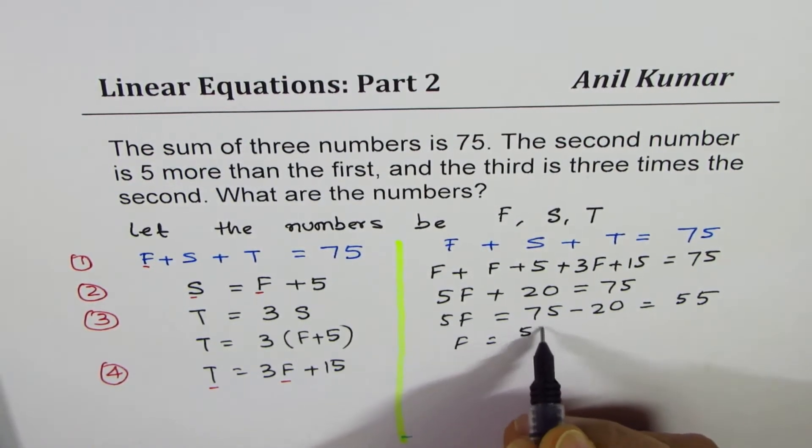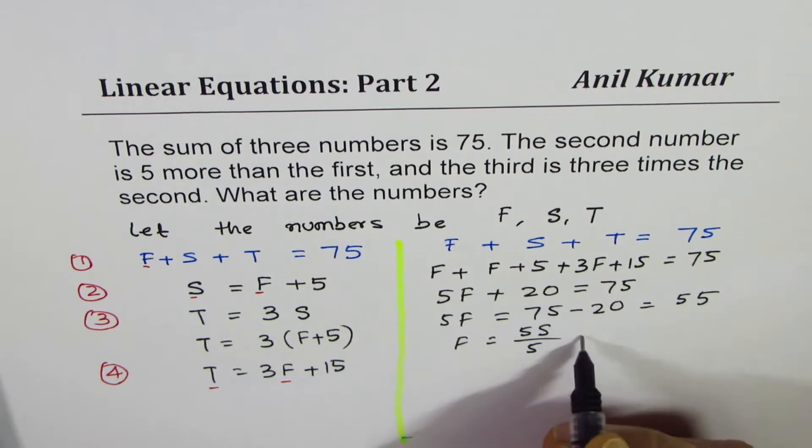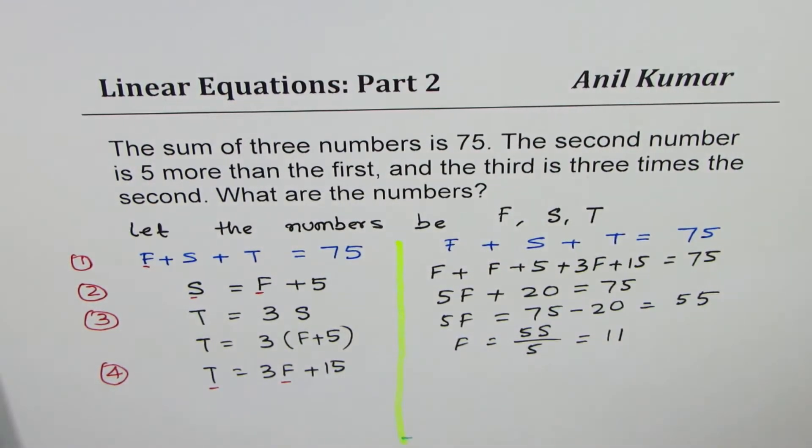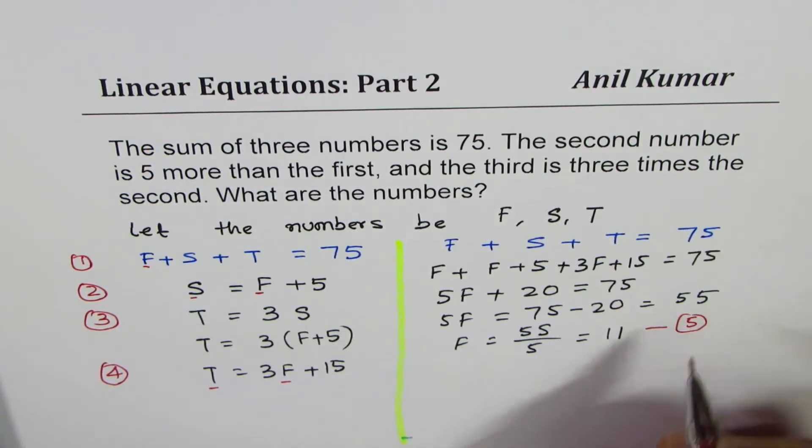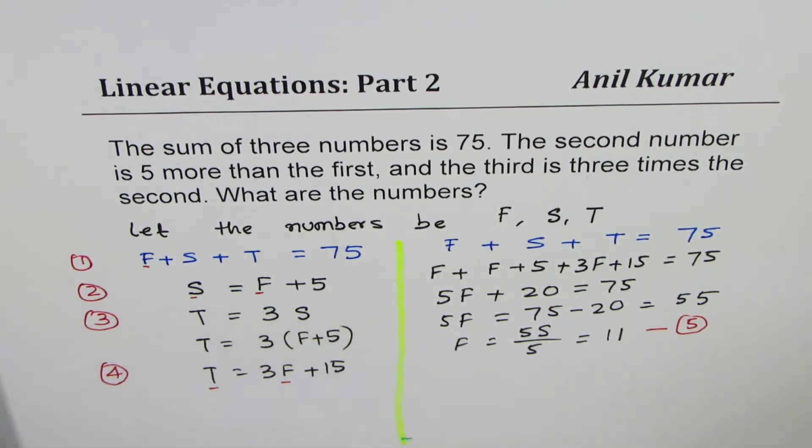So 5F = 75 - 20 = 55. Dividing both sides by 5, we get F = 55 ÷ 5 = 11. Now once you get the value of F, which is 11, let's call it equation 5.